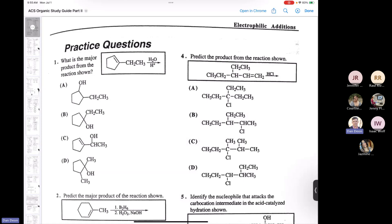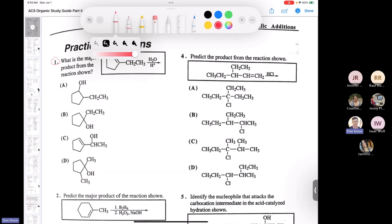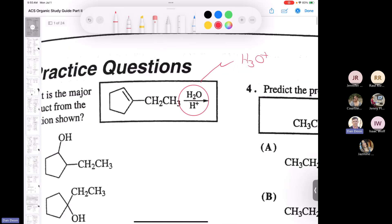Okay, so we're continuing on with electrophilic additions in this section of the ACS study guide. I wanted to take a look at question number one with you here. This is a chapter eight question. You can see it involves an alkene and then we're treating it with aqueous acid. If you have H2O and H+, this is the same thing as writing H3O+.